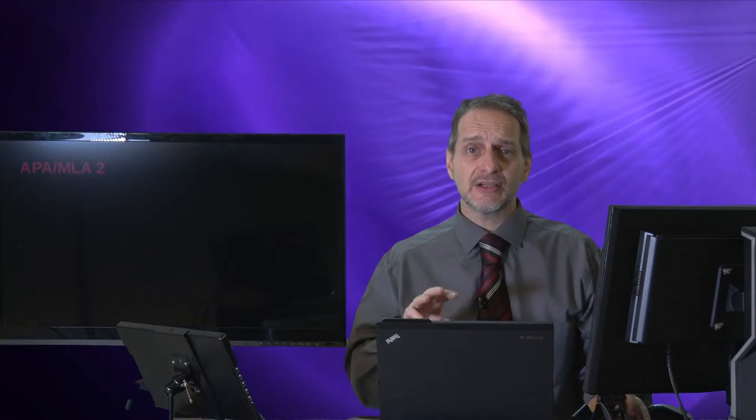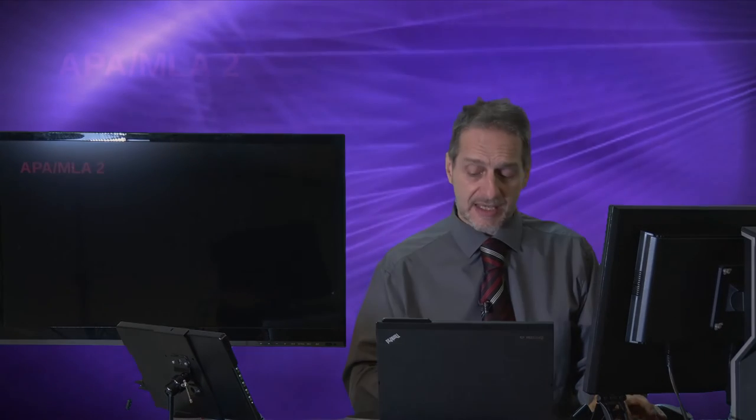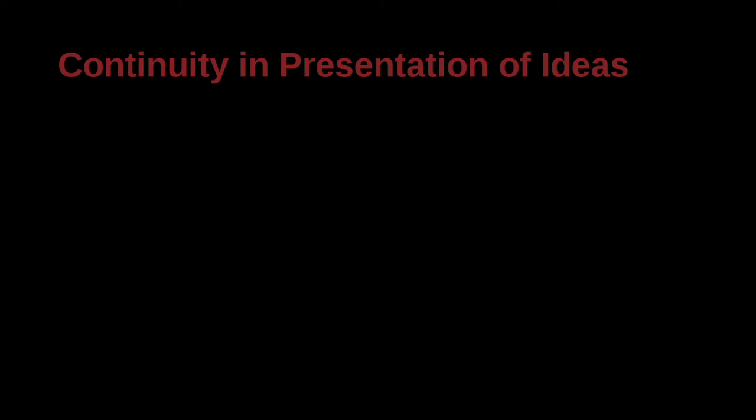This is unit two of our APA MLA course, where we're going to focus on how to keep your writing concise, clear, and not make people angry by writing the wrong kind of words. Then we're going to look at specific examples, sentence by sentence examples, which is going to be a little bit boring but very practical.